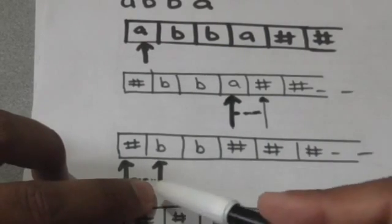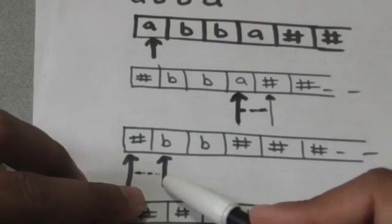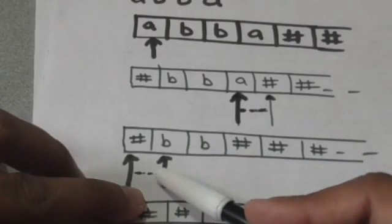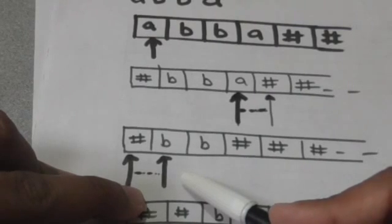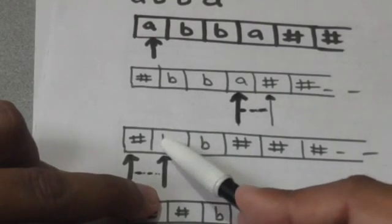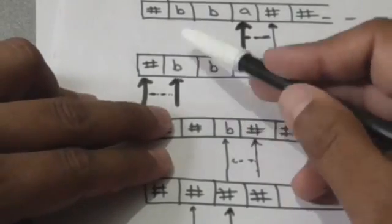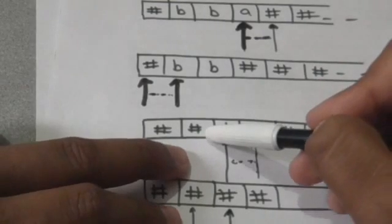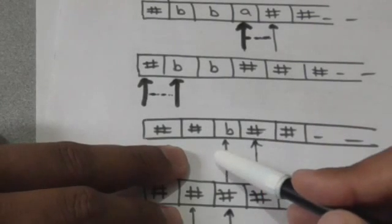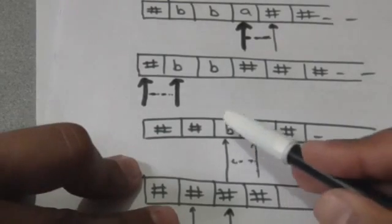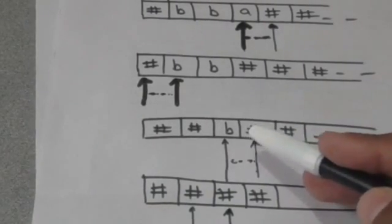If the symbol currently under the read-write head is blank, it means no input symbol remains in the string, and the Turing machine will jump to the final state — the string will be accepted. But if the symbol is not blank, input symbols remain in the string. The symbol currently under the head is the first input symbol of the remaining string, and the Turing machine will read and erase it.